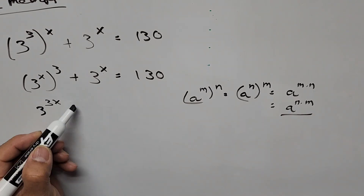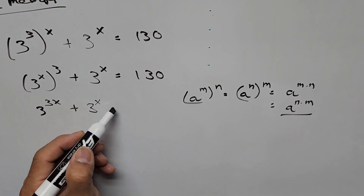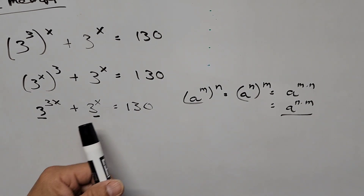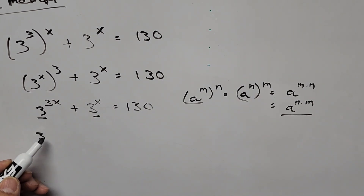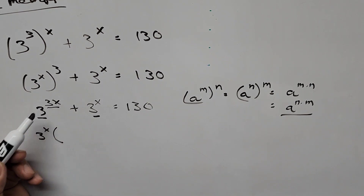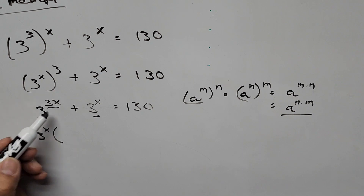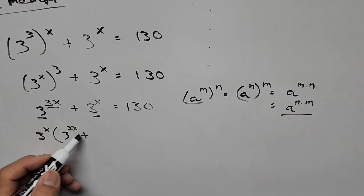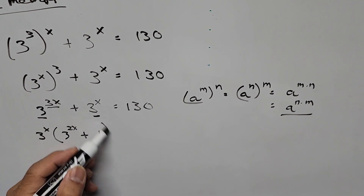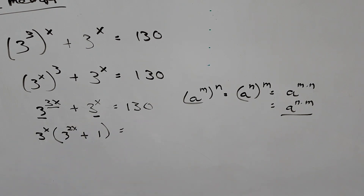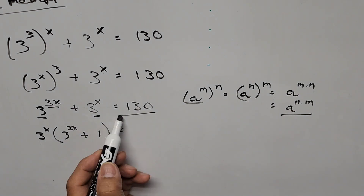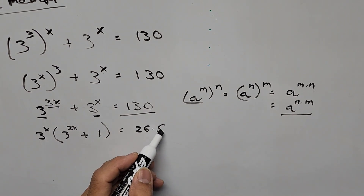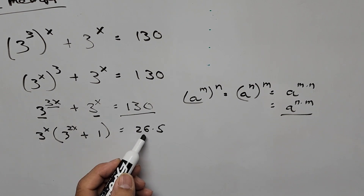So the equation is 3 to the power of 3x plus 3 to the power of x equals 130. Now we factor out 3 to the power of x. So we have 3 to the power of x times the quantity 3 to the power of 2x plus 1 equals 130. And 130 can be written as 26 times 5.